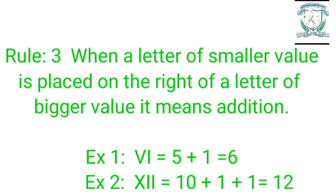Rule 3: When a letter of smaller value is placed on the right of a letter of bigger value, it means addition. Example 1: VI = 5 + 1 = 6. Example 2: XII = 10 + 1 + 1 = 12.